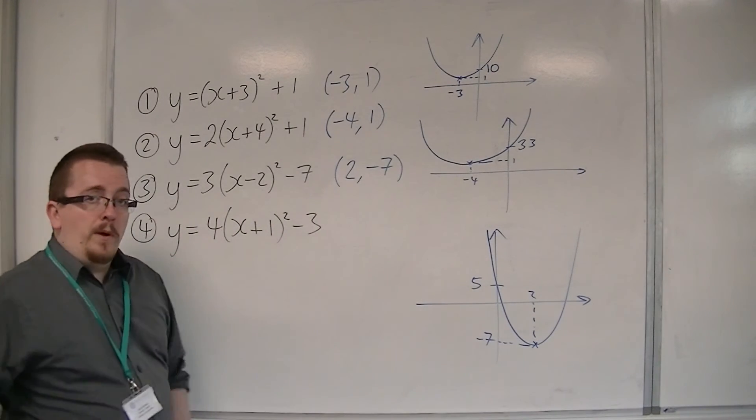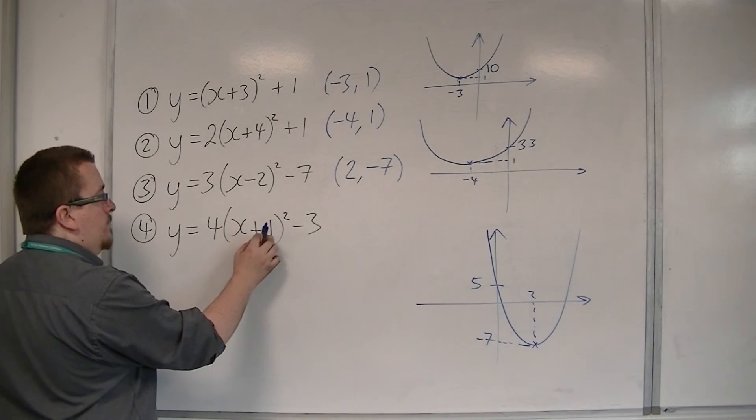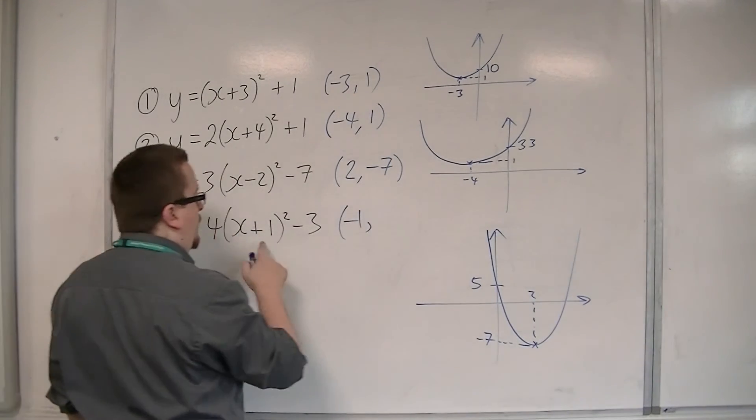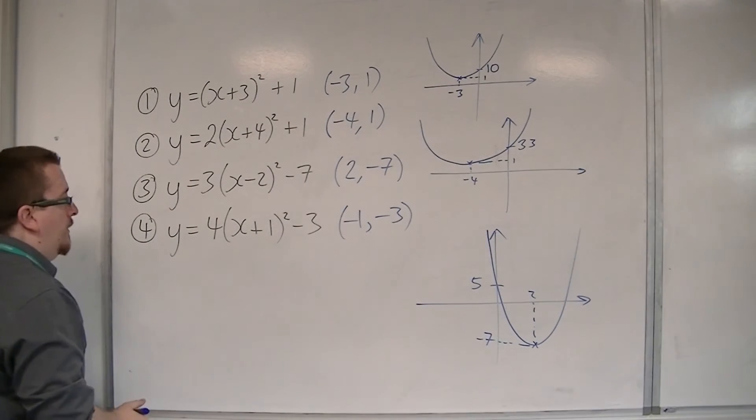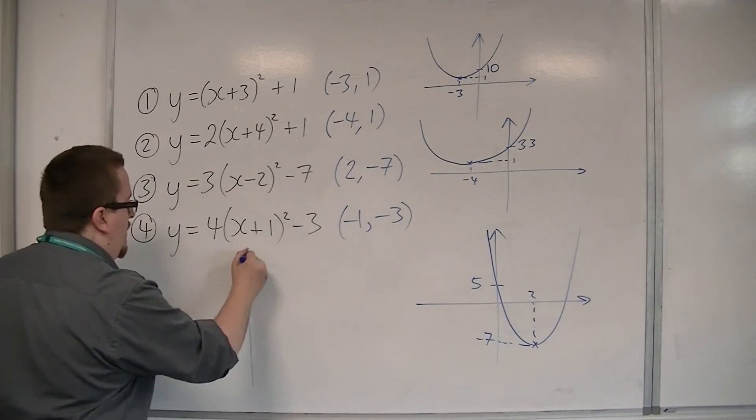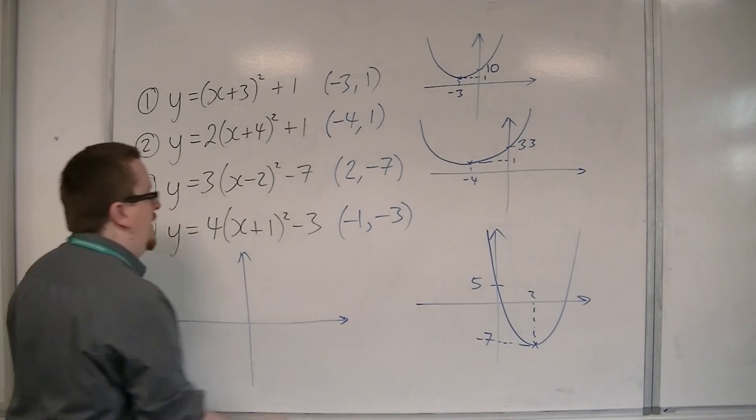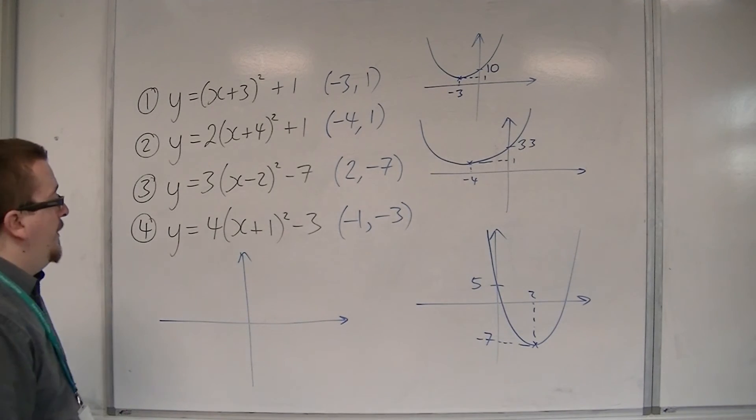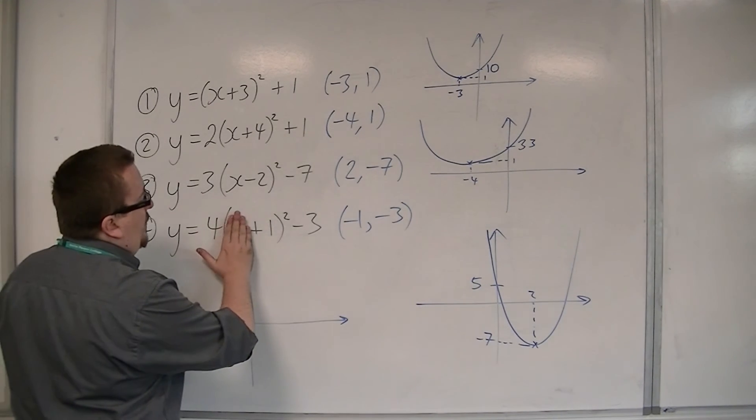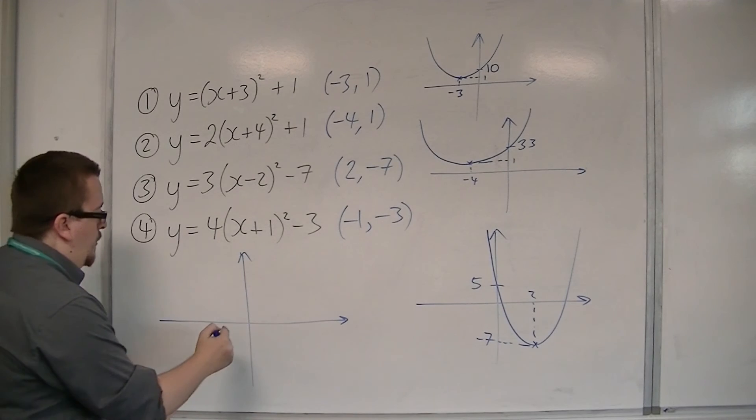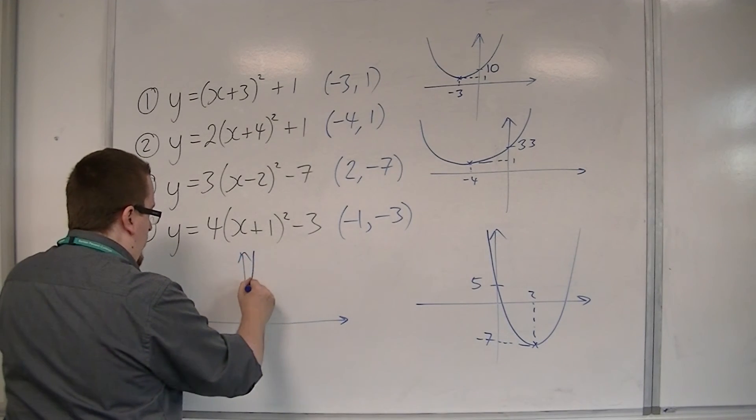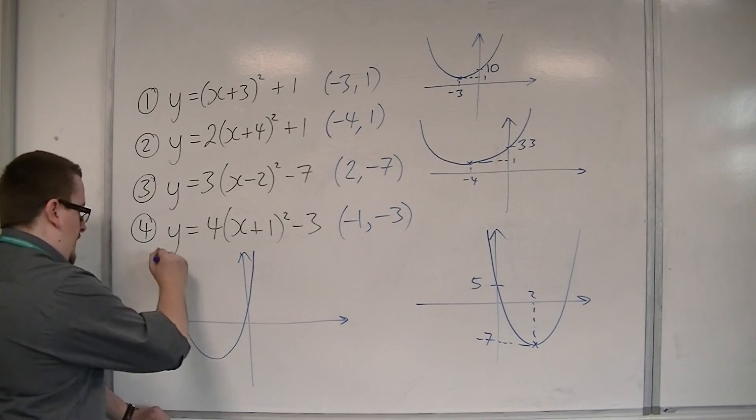Then we've got the last one. The vertex is going to be at minus 1, changes sign. Minus 3 stays the same. So learning from my mistake, let's figure out where it crosses the y-axis first. So when x is 0, I get 4 lots of 1 squared, so that's 4 lots of 1. So 4 take away 3 is 1. So it must look something like this. There's 1.